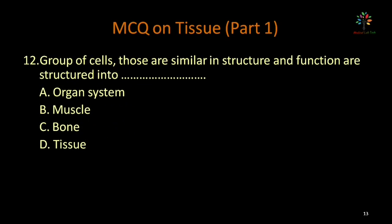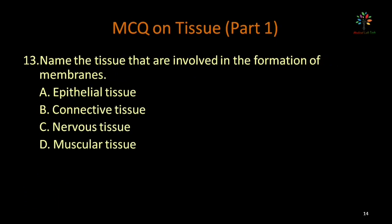A group of cells similar in structure and function are organized into — organ system, muscle, bone, or tissue. Tissue is the correct option here. Correct answer is tissue.